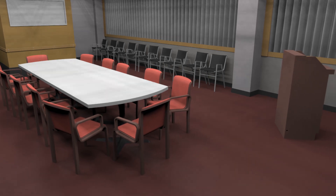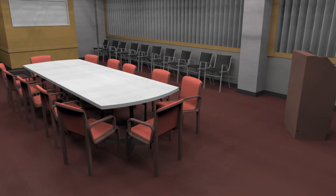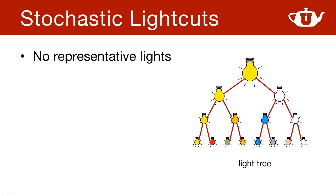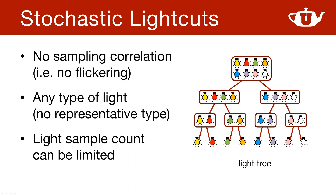Here's an example sequence rendered using light cuts in a scene with 1400 light sources. You can see that the flickering can be substantial. With the stochastic light cuts method introduced in this paper, we eliminate this problem and we can make the lighting estimation so much faster. The key idea is removing the representative lights from the light tree. Instead, we treat each internal node as a collection of the lights below its subtree. When we need to sample a node, we simply select one of its lights at random. This simple change completely eliminates sampling correlation. As a result, we eliminate flickering and replace it with noise.